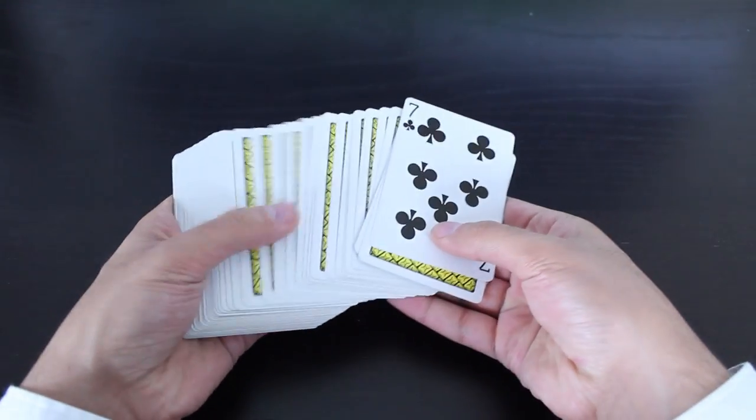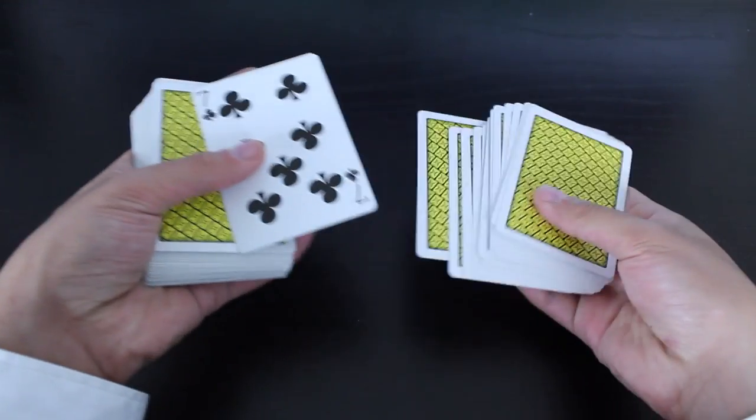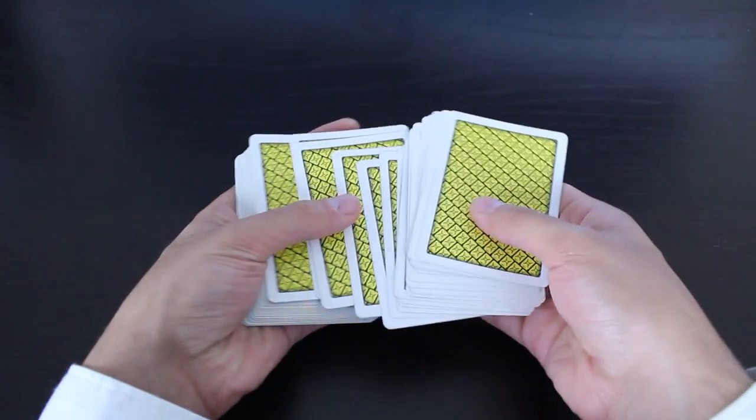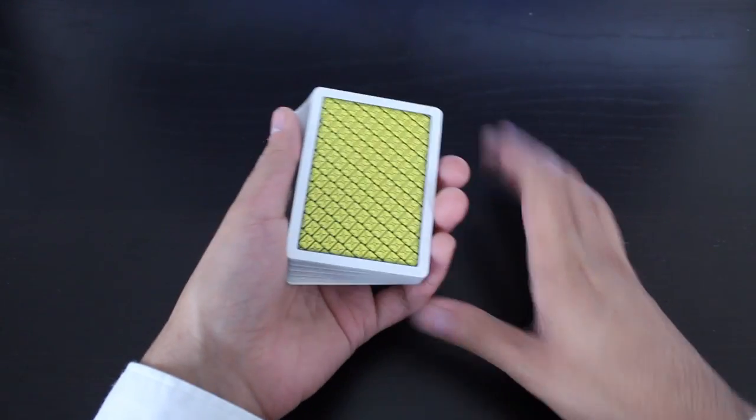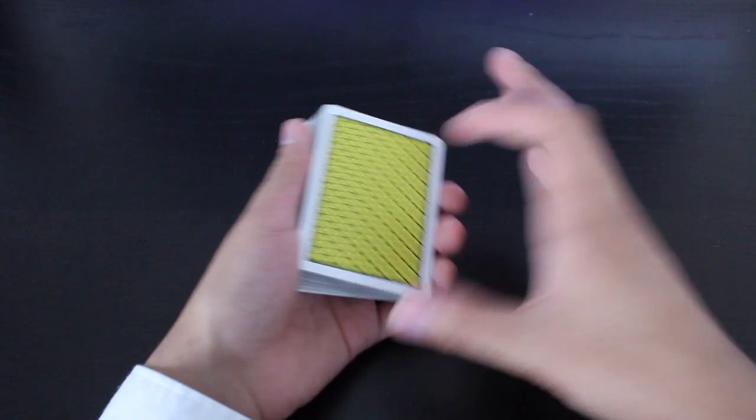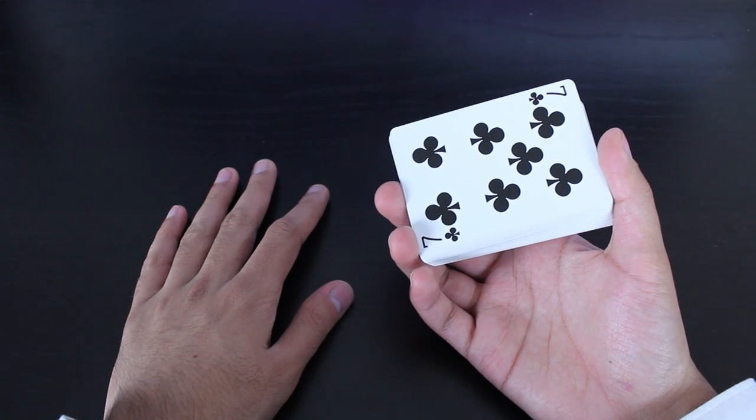They would take it and let's say they place it back into the pack. So the spread cull is basically in the process of closing the spread up. It's done. The card has already been controlled. It happens that quickly.